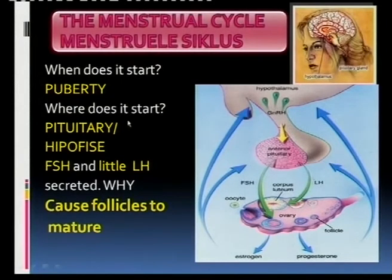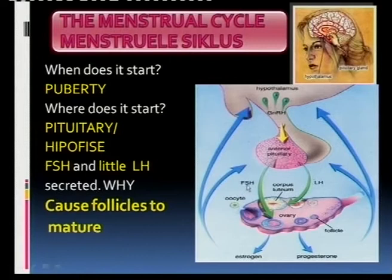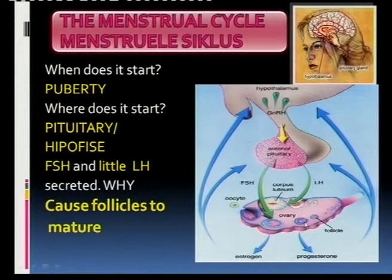At puberty — when does it start? At puberty. The hypothalamus stimulates the pituitary gland at puberty to secrete a lot of FSH. Do you know what FSH stands for? The follicle stimulating hormone. And that is exactly what it's supposed to do. The target organ is the ovary, and we're going to show you another diagram where you can see where the brain and the ovary are situated, far apart from one another.